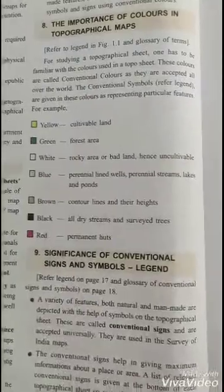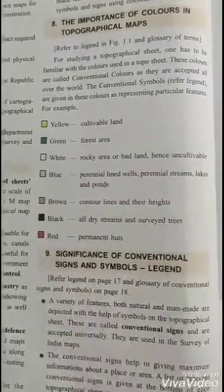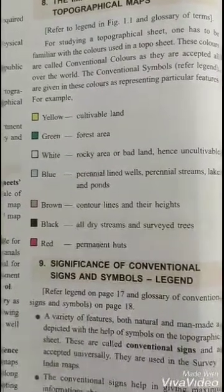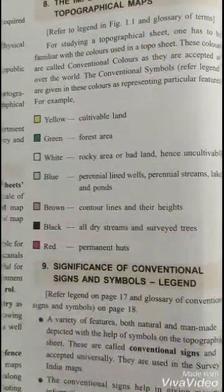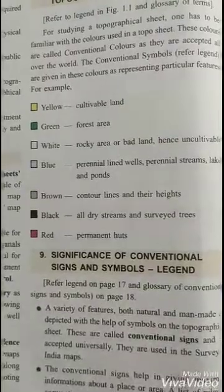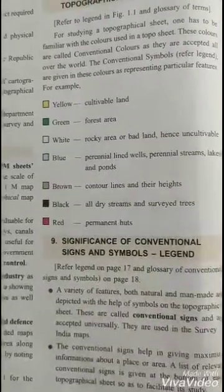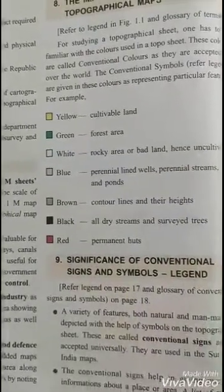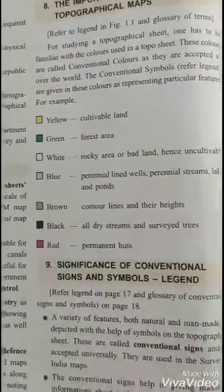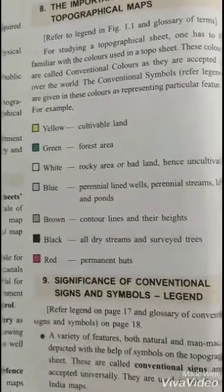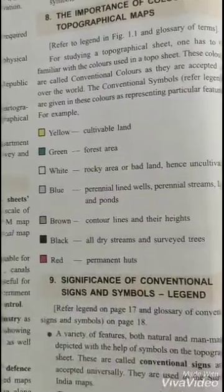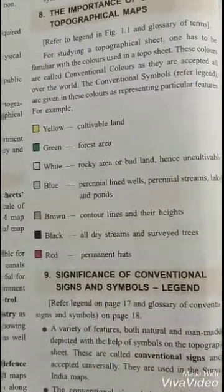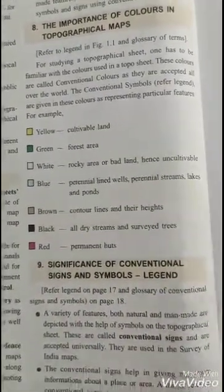Various colors on the topographical map or survey sheet signify different meanings. Yellow color represents cultivated land. Green color represents forest area. White color represents barren land or uncultivable land. Blue is for water. Brown is for contour lines, mountains, sand dunes, and their heights. Black color represents dry rivers, streams, survey trees, and all names. Red color represents permanent structures, roads, and metalled and unmetalled roads.